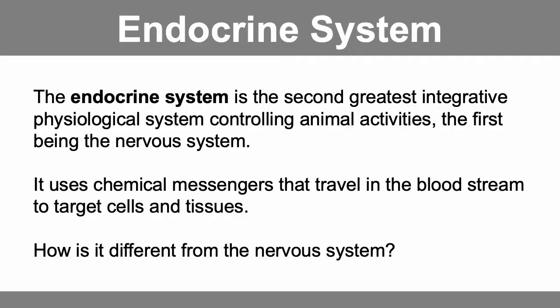The endocrine system is the second greatest integrative physiological system controlling animal activities. The first being, of course, the nervous system, which we've already gone over. The endocrine system uses chemical messengers that travel in the bloodstream to target cells and tissues.